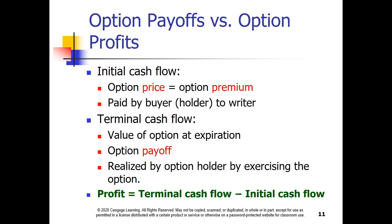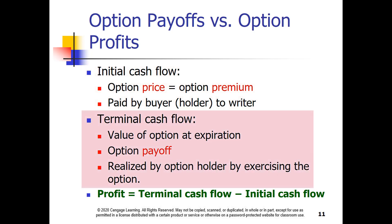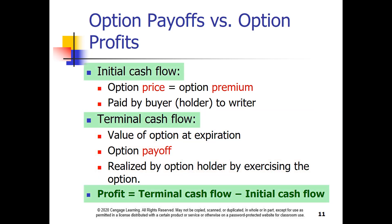We need to differentiate between payoff and profit. The payoff from holding an option can never be negative, but the profit can, as we'll see on the following slides. The option premium or price is paid by the buyer at the time of purchase — no margin available. The terminal value is the value of the option at exercise or expiration. The cost of the original option has to be subtracted to arrive at the profit.